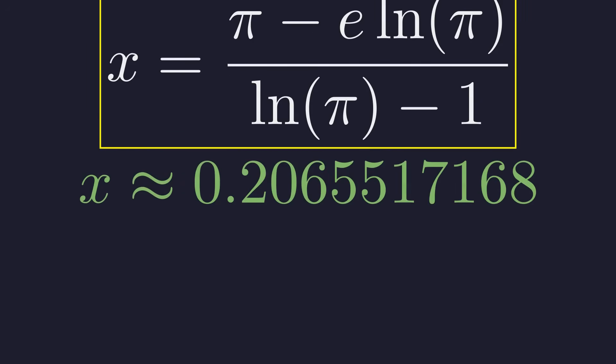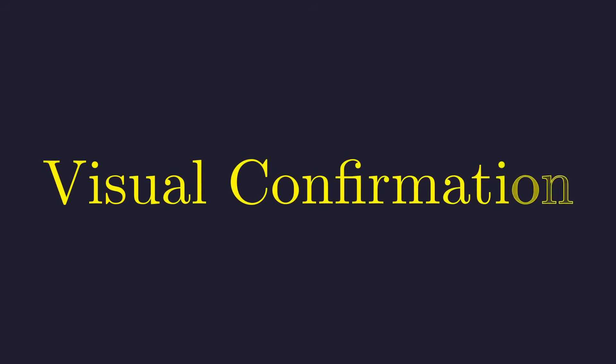Numerically, this value is approximately 0.2065. Let's visually confirm this solution. We'll plot the functions from the left and right sides of the original equation. The intersection point's x coordinate should match our solution.